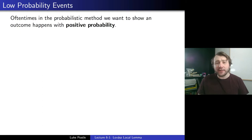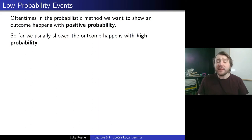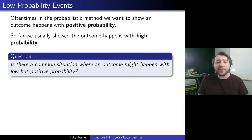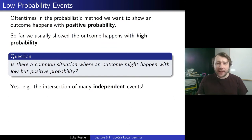So oftentimes in the probabilistic method, we want to show an outcome happens with positive probability. So far, we've usually shown the outcome happens with high probability. So a question that's somewhat natural: is there a common situation where an outcome might happen with low but positive probability? You might want to pause and think for a moment how this might arise.